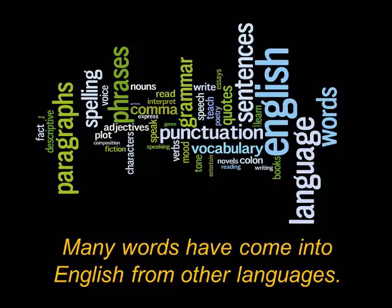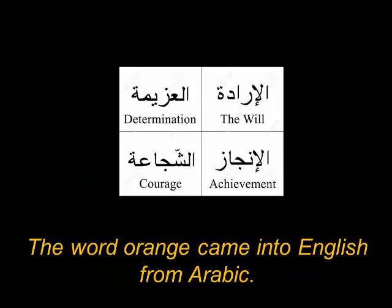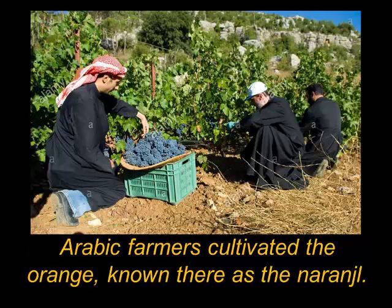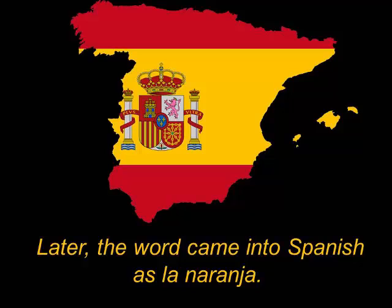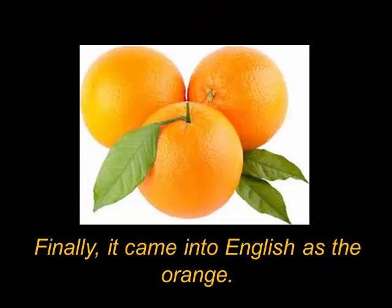Many words have come into English from other languages. The word orange came into English from Arabic. Arabic farmers cultivated the orange, known there as the naranjil. Later, the word came into Spanish as la naranja. Finally, it came into English as the orange.